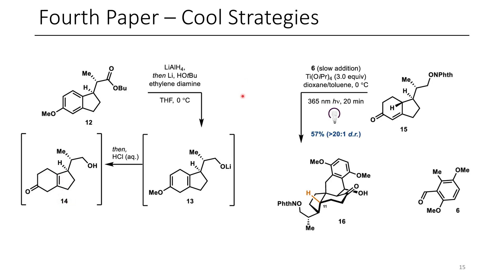Another reaction that I really liked was this intermolecular Diels-Alder reaction. The methyl group and the carbonyl are the two double bonds. They generate this diene through photoexcitation, and they use titanium as a Lewis acid to help direct the diastereoselectivity of this reaction.